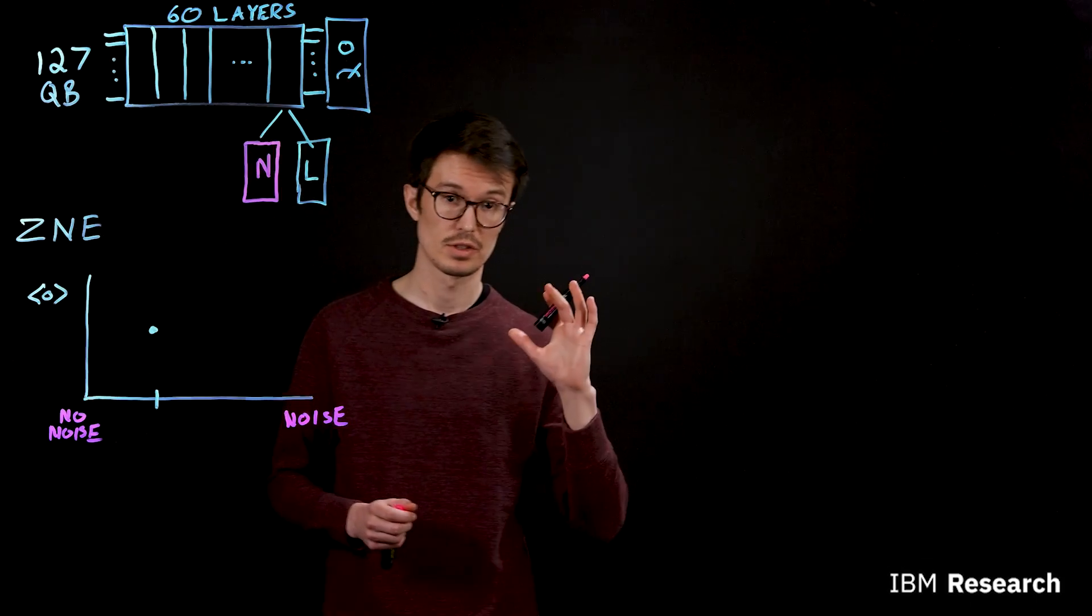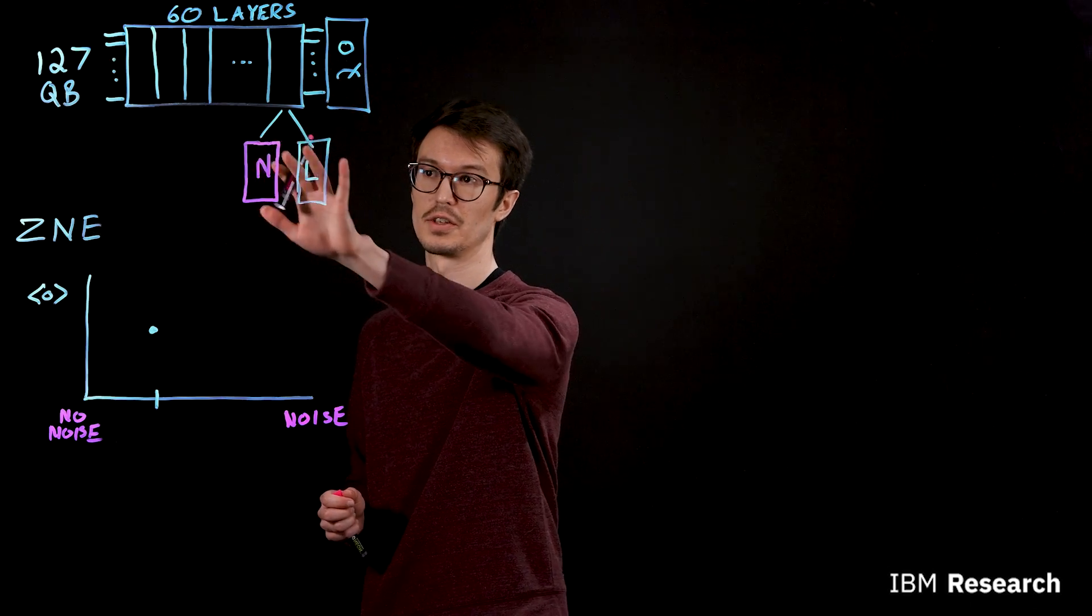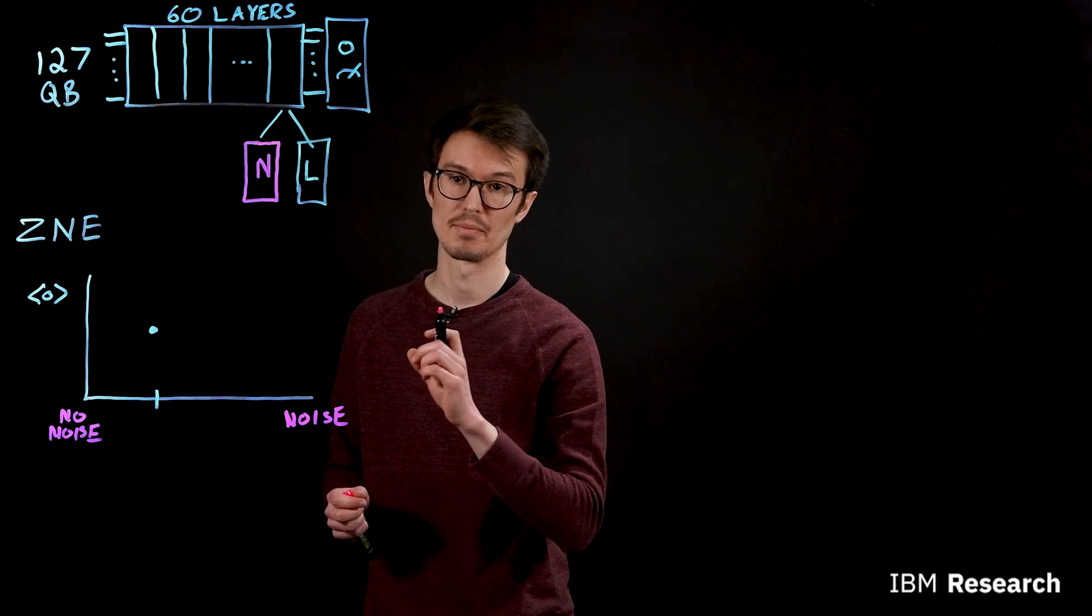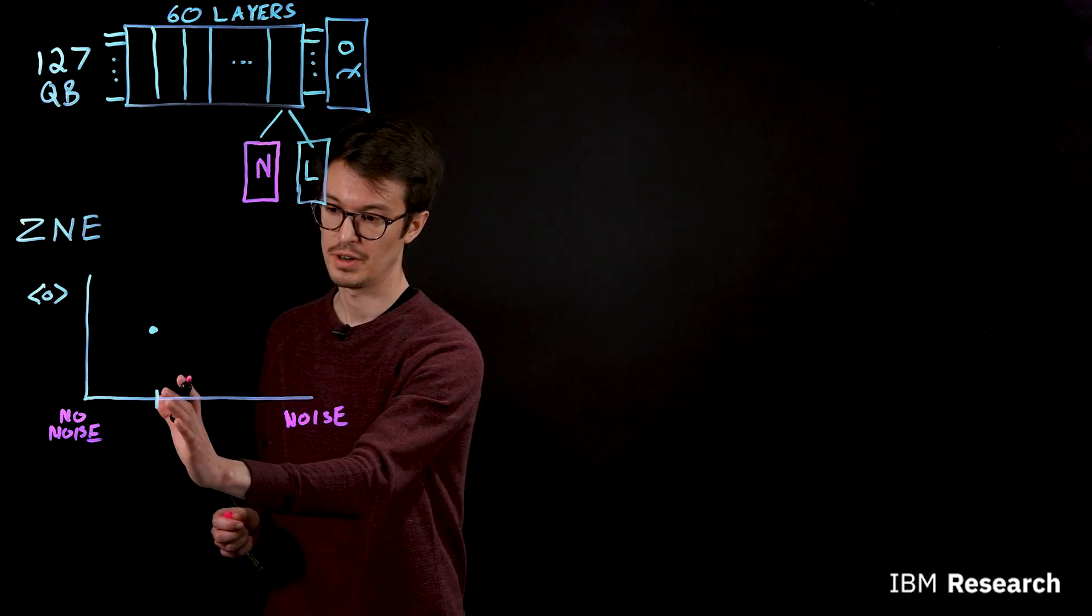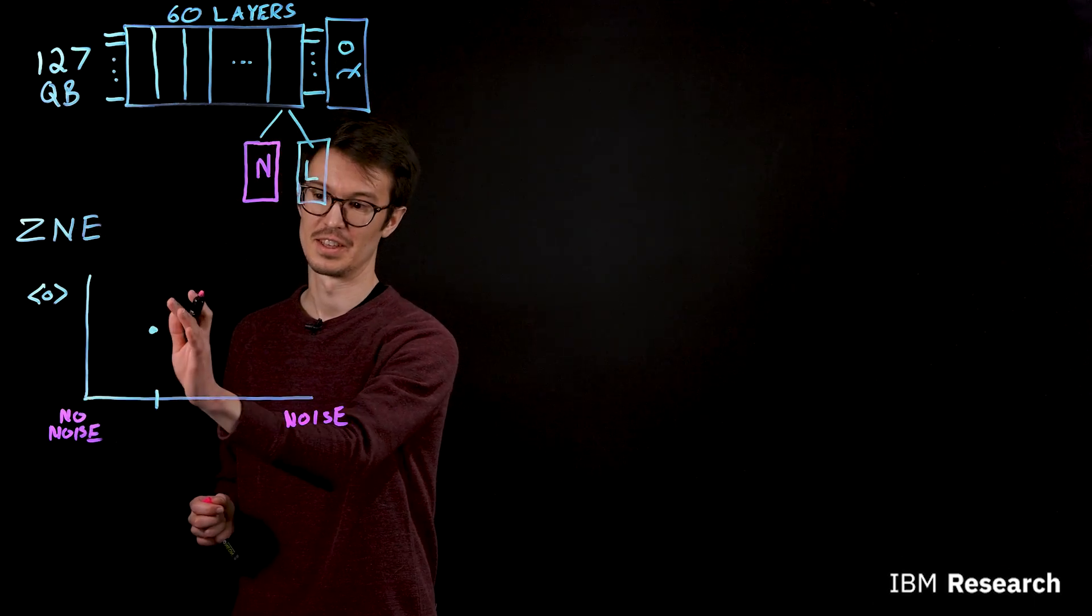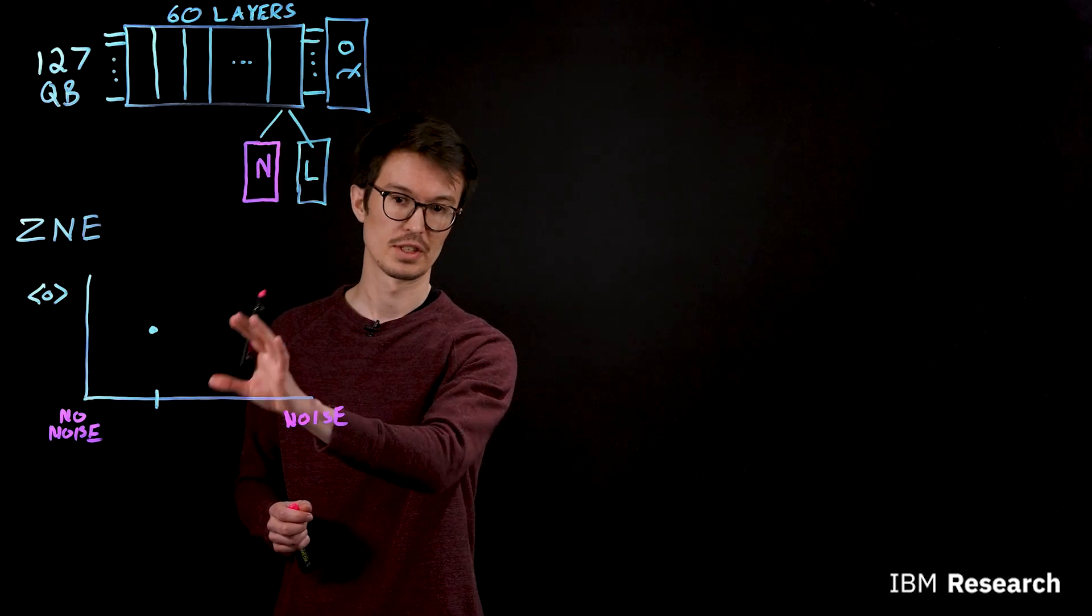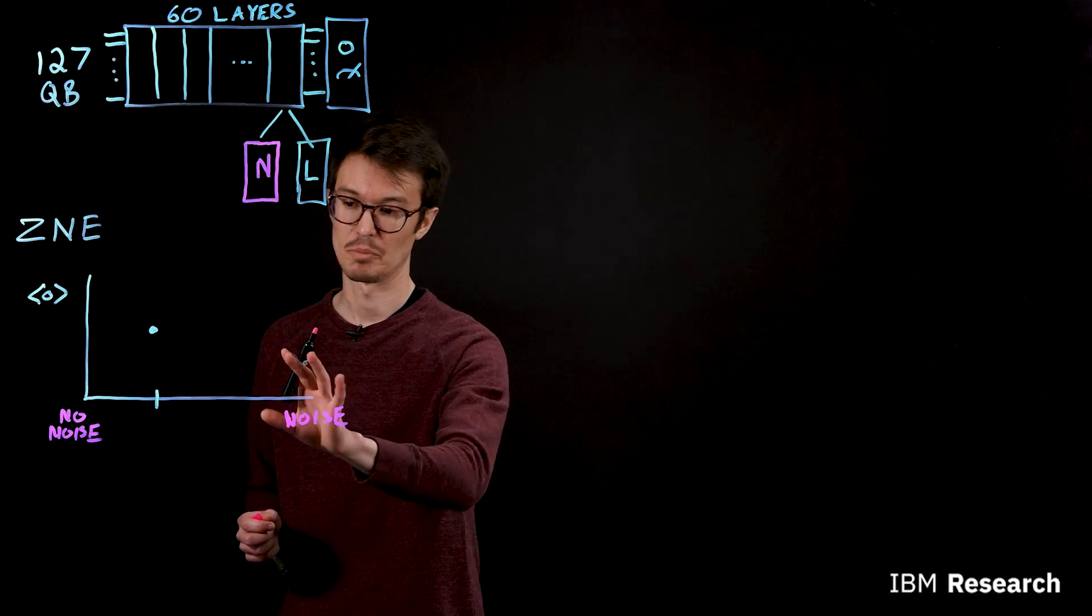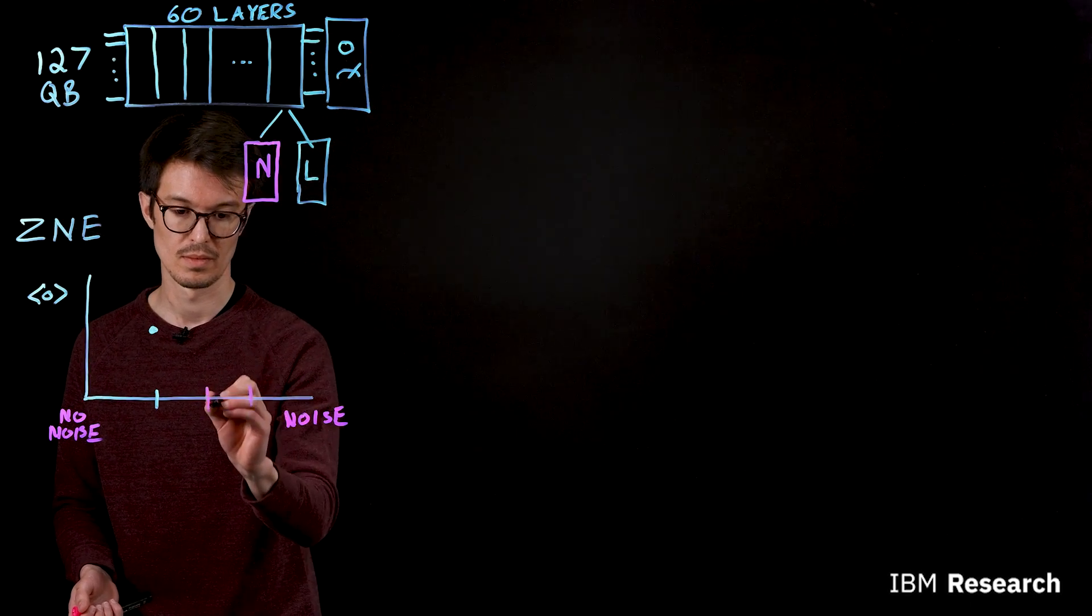And so by doing a bit of extra additional work, we can go and measure how all of these noise pieces in the circuit are behaving. And once we have that information, although it's hard to turn down the level of noise that's happening on the hardware, we are able to use that knowledge to turn it up.